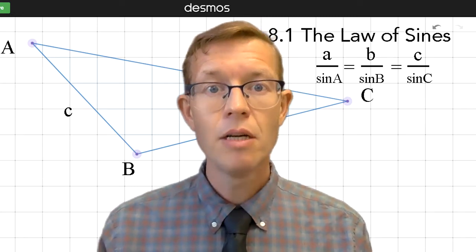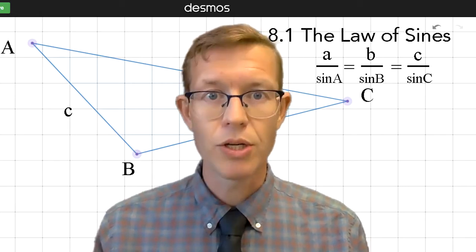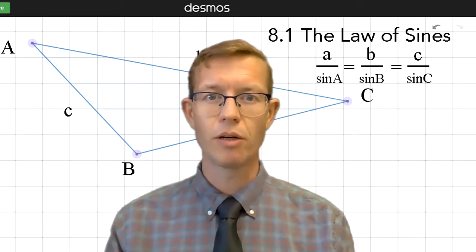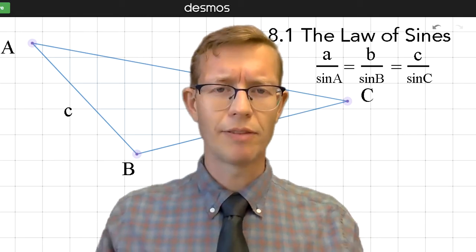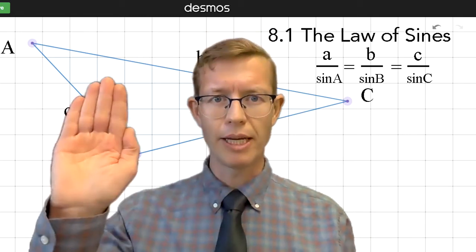The law of sines itself is pretty straightforward. It's a ratio equaling a ratio equaling a ratio. Of course, I would only use two of those ratios at a time because of our knowledge of equations really has something equaling something.